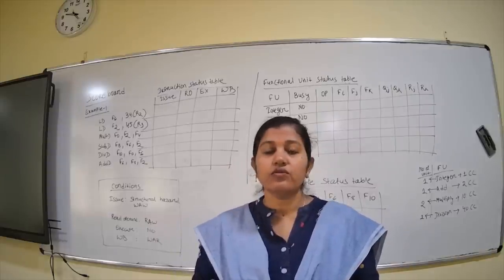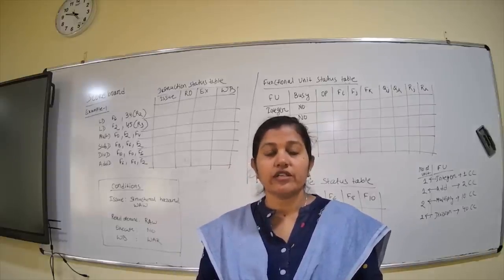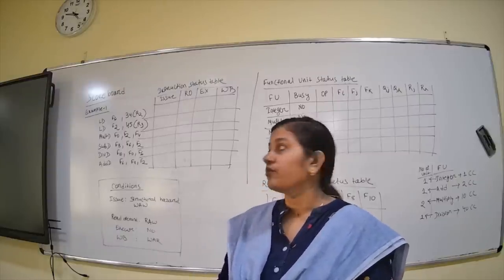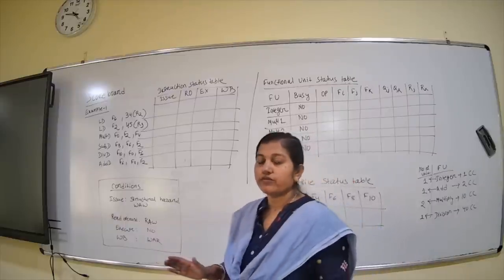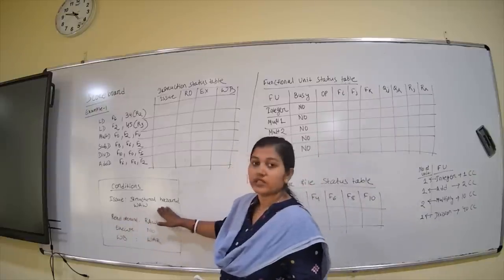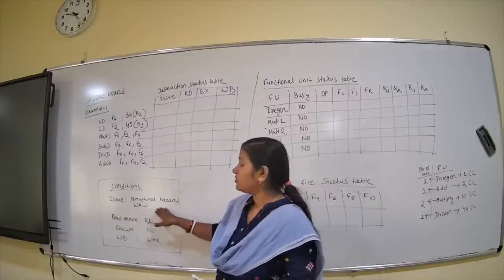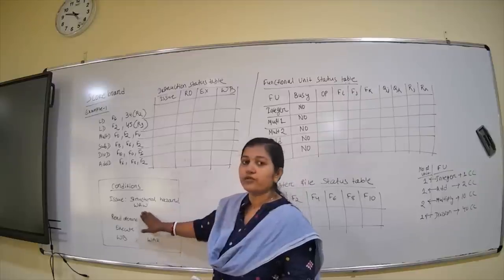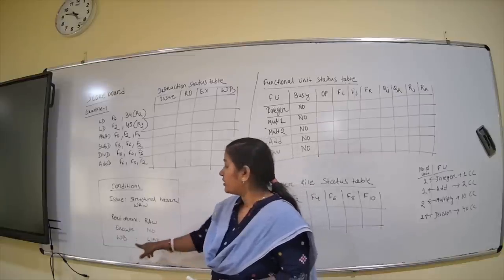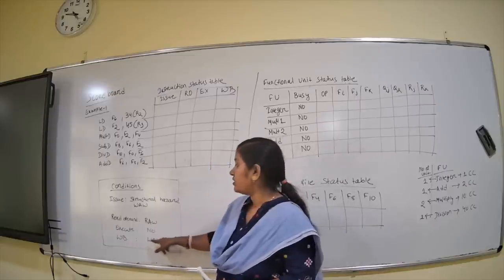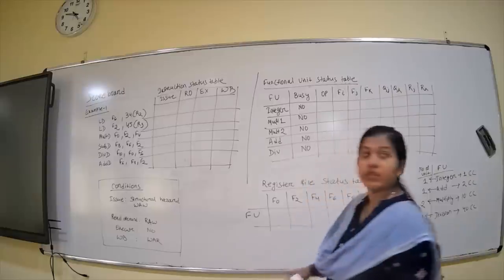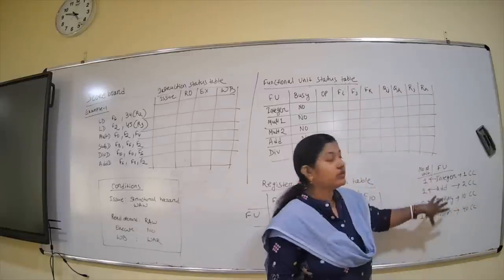We will discuss the scoreboard through an example. In the last lecture we gave the introduction regarding the scoreboard, now we will see how it works through an example. First, you have to remember: at the issue stage you check for structural hazards and WAW dependency. At read operand you check RAW dependency, at write back you check WAR dependency, and for execution there are no hazards.